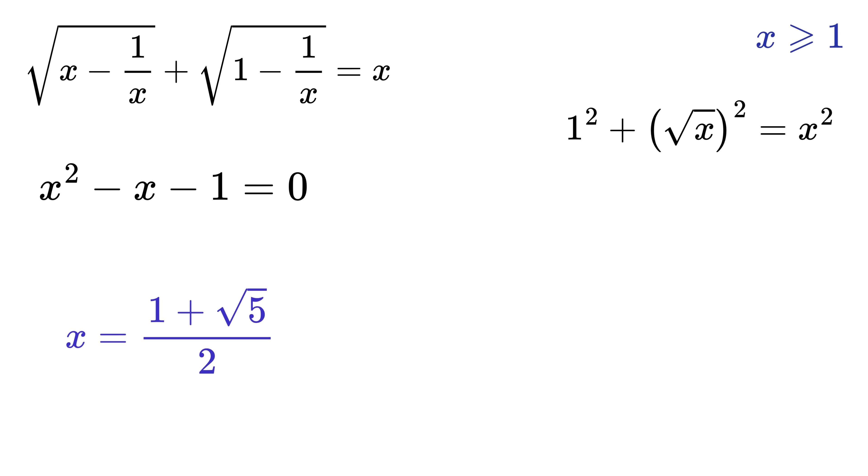We get the value of x as this and this. Oh, wow! This value is none other than the golden ratio, and the other value is equal to the negative reciprocal of the golden ratio. But hey, we have already defined our domain as x greater than or equal to 1, and thus we reject this value of x. So, our final answer is x equals golden ratio.